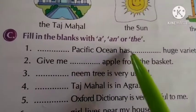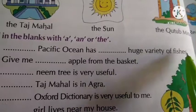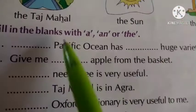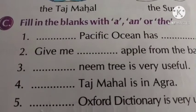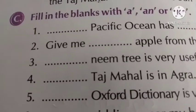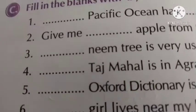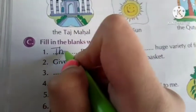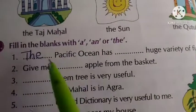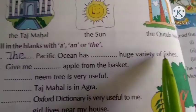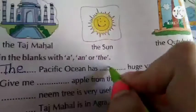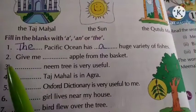Number 1: 'Dash Pacific Ocean has a huge variety of fishes.' Okay, Pacific Ocean — look, a particular name is coming before the article, right? Like we have explained earlier, when a particular name is given, what do we use? The. So the answer is: The Pacific Ocean has a huge variety of fishes.